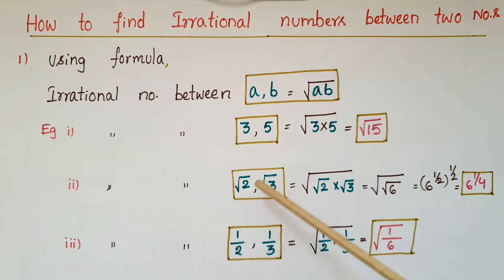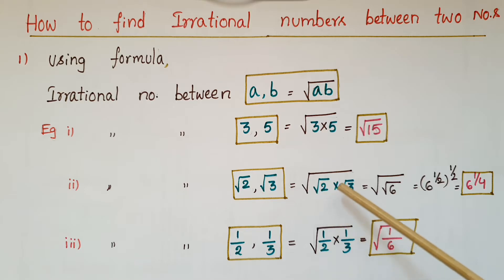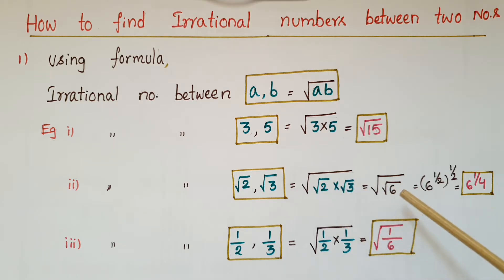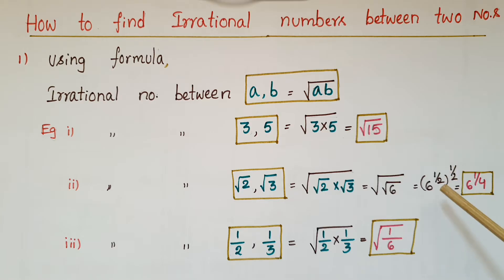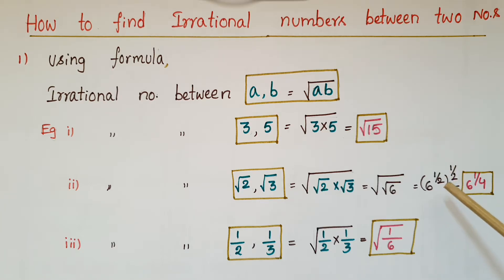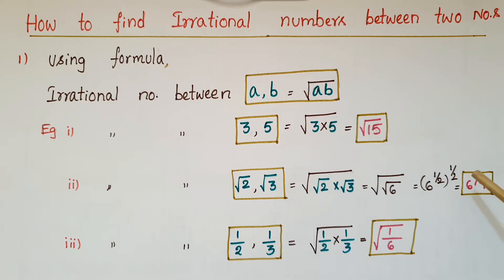The irrational number between root 2 and root 3 is equal to root of (root 2 into root 3), that is equal to root of root 6. Now, root 6 is 6 to the power of 1 by 2, and taking one more root gives 6 to the power of 1 by 2, whole to the power of 1 by 2. Using the rule a to the power m, whole to the power n equals a to the power mn, this becomes 6 to the power of 1 by 4.